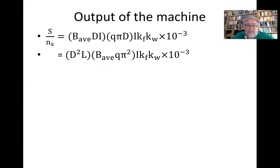That gives us D² L B_average Q π² times I times k_f times k_w.